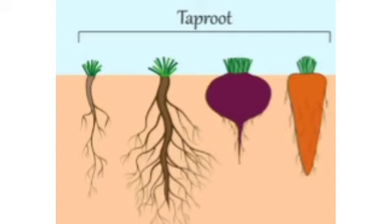Some plants like carrot, radish and beetroot have one main root with thinner roots growing from it — that is a tap root. One main root with thinner roots that grow deep into the soil.